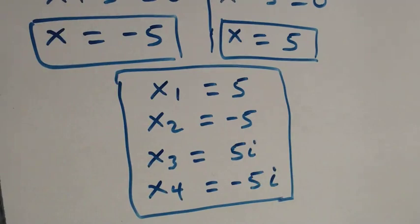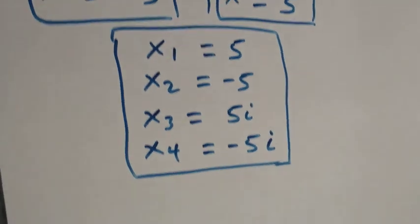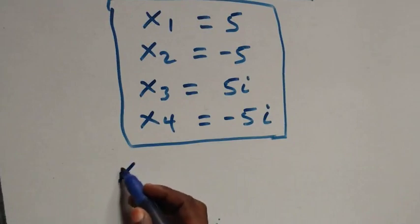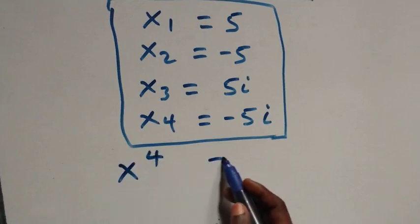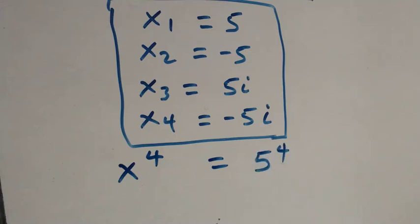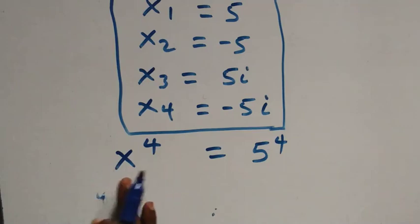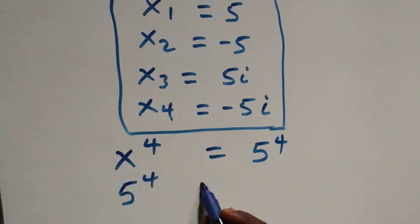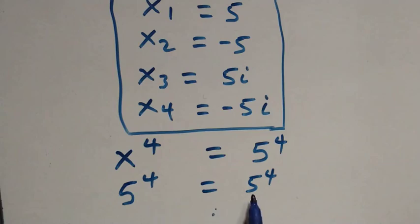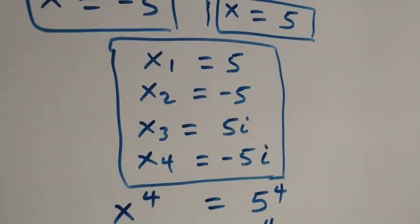Now when we check on what is given, which is x raised to the power of 4 equals to 5 raised to the power of 4: when x equals to 5, it becomes 5 raised to the power of 4 is equal to 5 raised to the power of 4. The left hand side equals to the right hand side, so x equals to 5 satisfies this given problem.